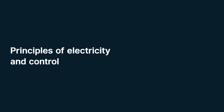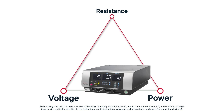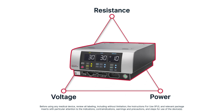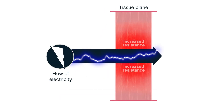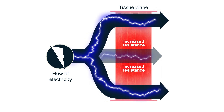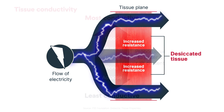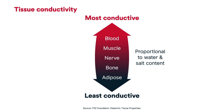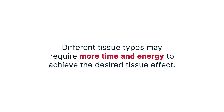Principles of Electricity and Control. Modern electrosurgery generators use the principles of electricity and balance voltage, power, and the resistance encountered from tissue impedance to deliver the desired tissue effect. If an electrical current is impeded, it will find an alternate, less resistant path to complete the circuit. In electrosurgery, the most common source of tissue resistance is desiccation, or the loss of moisture when heat is applied. Tissue conductivity is proportional to its water and salt content. Blood is the most conductive, and adipose tissue is the least conductive. This explains why different tissue types may require more time and energy to achieve the desired tissue effect.